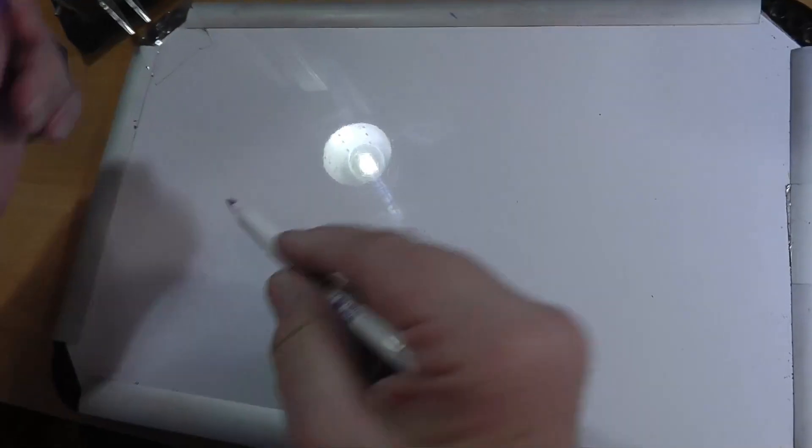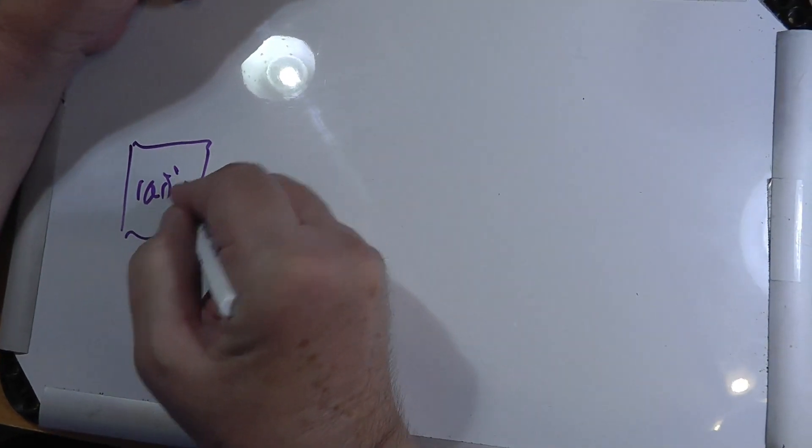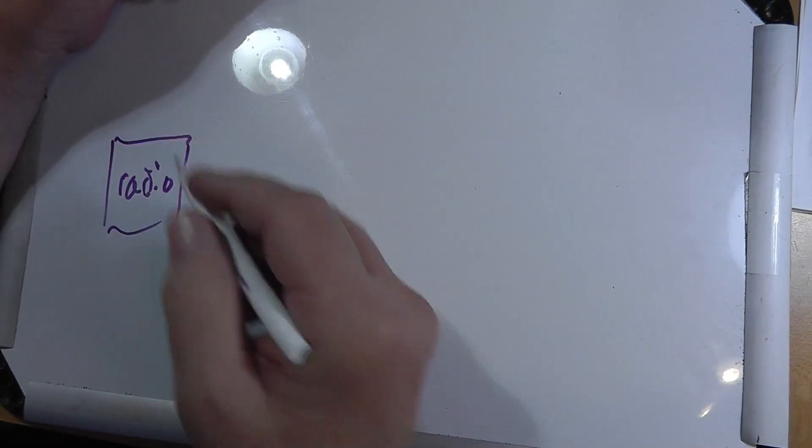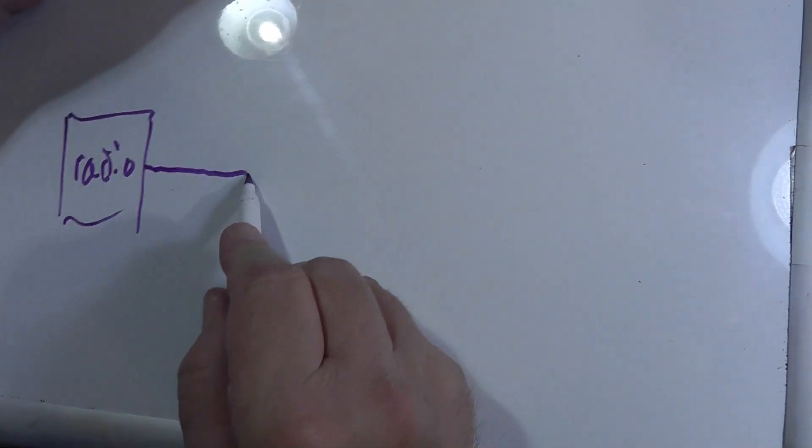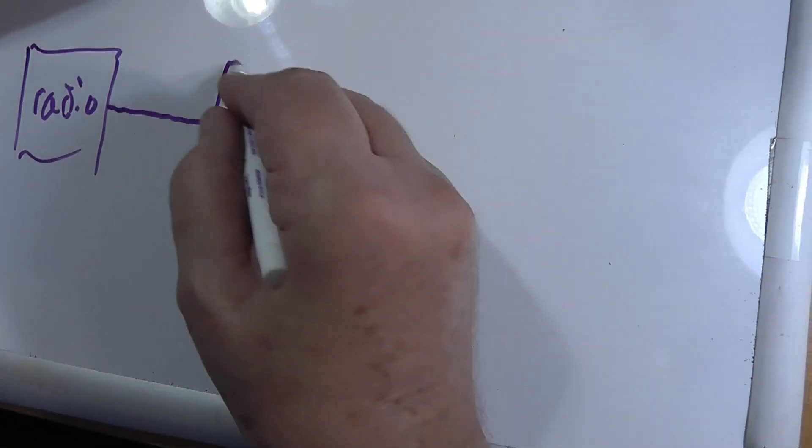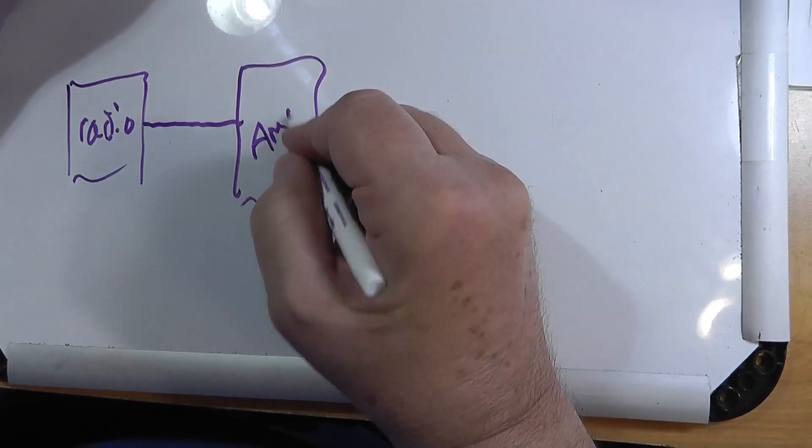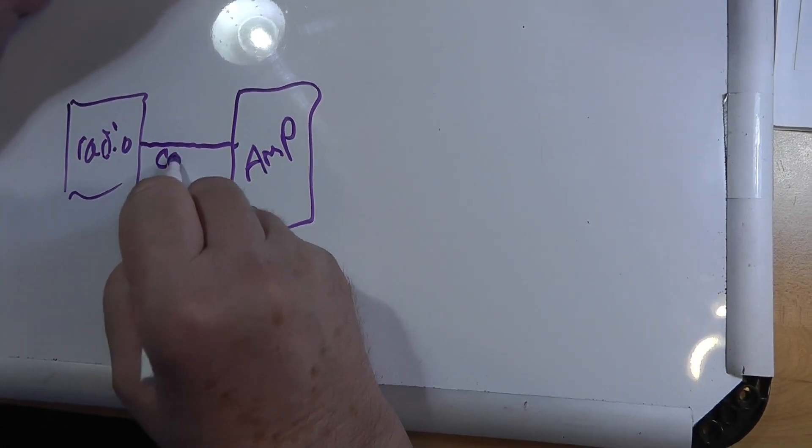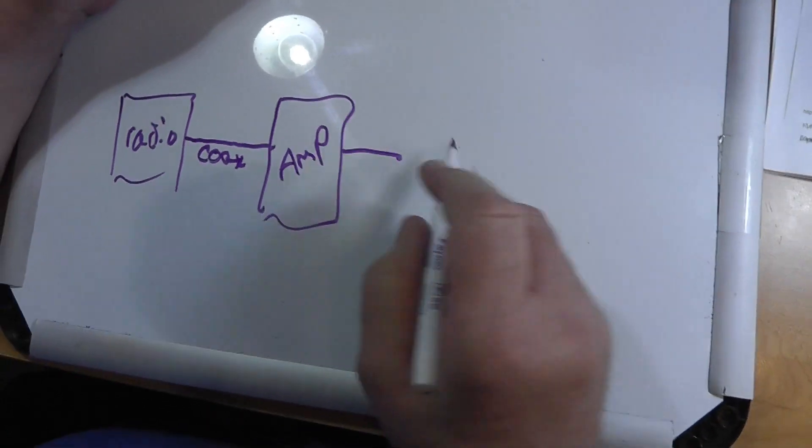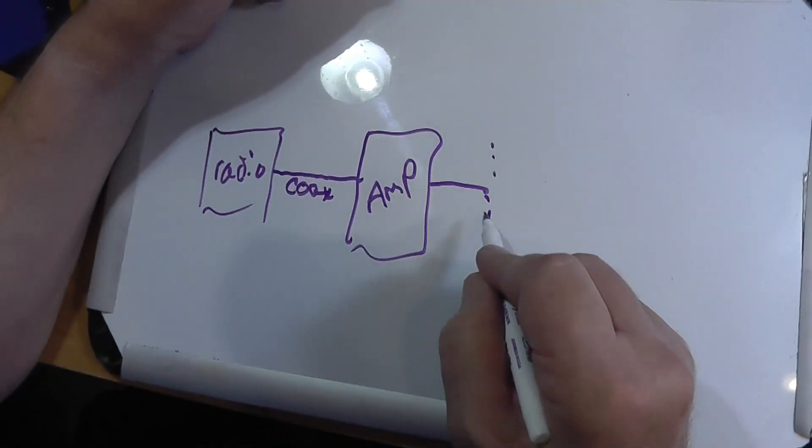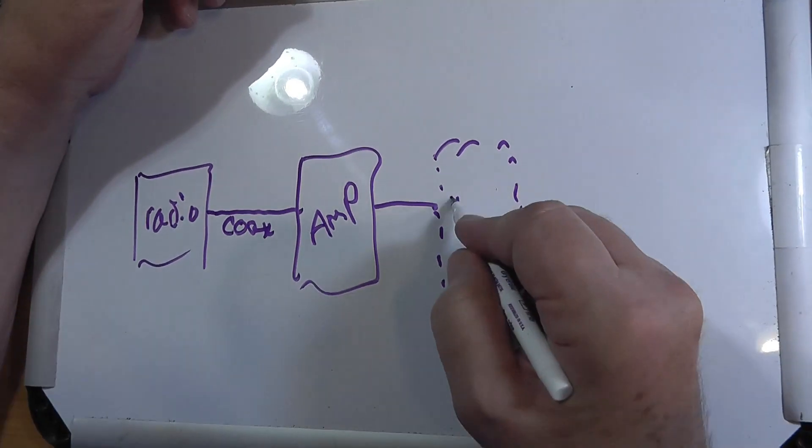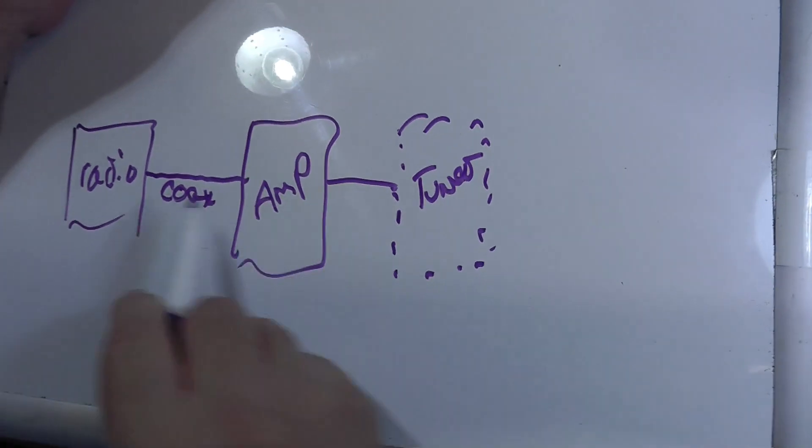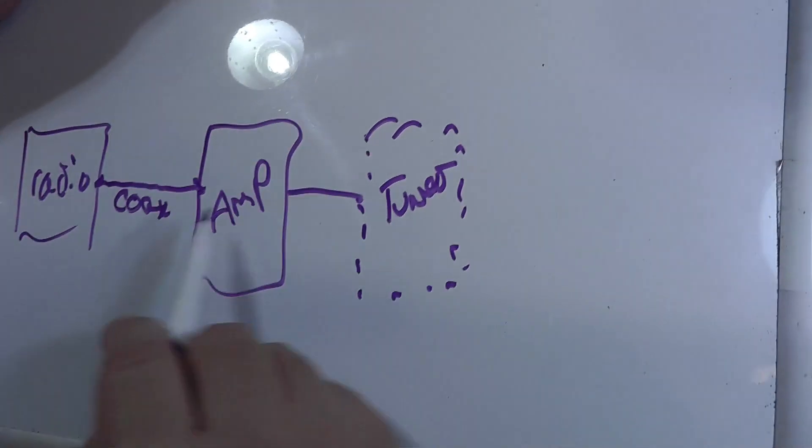So let's take a look at the whiteboard. And we have your radio. And then there's a coax cable that goes to the amp. And then a coax cable that might go through a tuner. This is 50 ohms, this is 50 ohms, so you're fine there.